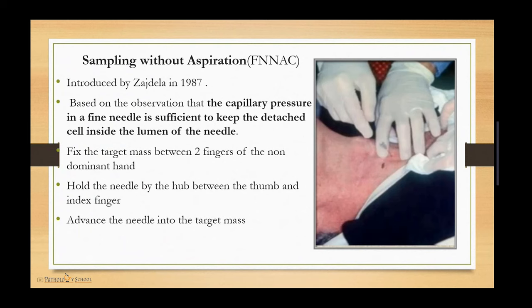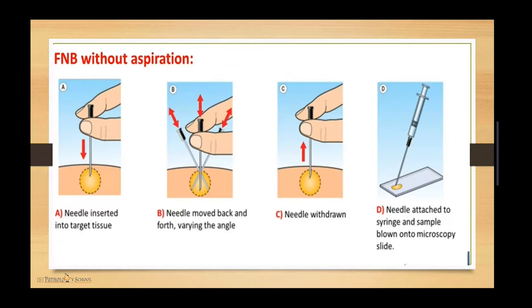The next technique is sampling without aspiration, also called fine needle non-aspiration cytology, introduced by Zajicek in 1987. It is based on the observation that capillary pressure in a fine needle is sufficient to keep detached cells inside the lumen of the needle. The steps are: clean the site with spirit and cotton, fix the target mass between two fingers of the non-dominant hand, hold the needle between thumb and index finger, advance the needle into the target mass, move it back and forth varying the angle, then withdraw and attach to a syringe and blow the sample onto a microscopy slide.